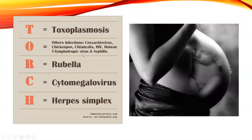A TORCH screen is an acronym for specific infections. If a woman has had multiple miscarriages, we look for a TORCH screen to see if she's carrying one of these viruses. TORCH stands for: T — Toxoplasmosis, O — Other infections including chickenpox, chlamydia, HIV, human T-cell lymphotropic virus, and syphilis, R — Rubella, C — Cytomegalovirus, and H — Herpes.